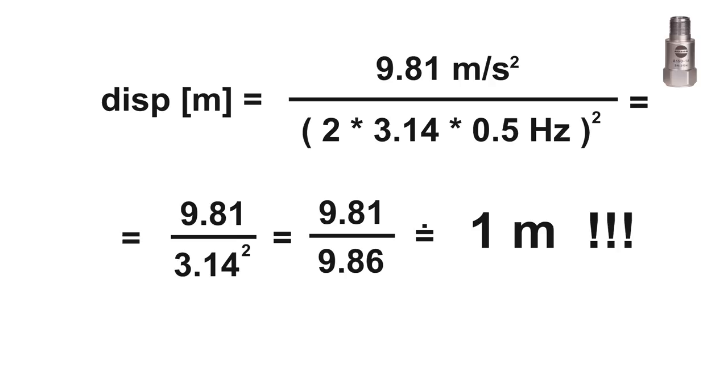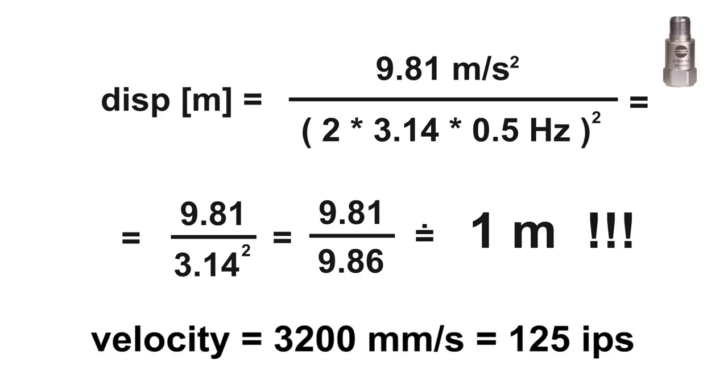The corresponding displacement level is 1 m. Not 1 mm. Really 1 m. No machine could work with such vibration level. The corresponding velocity level is 3200 mm per second. It is 125 inches per second. Impossible.